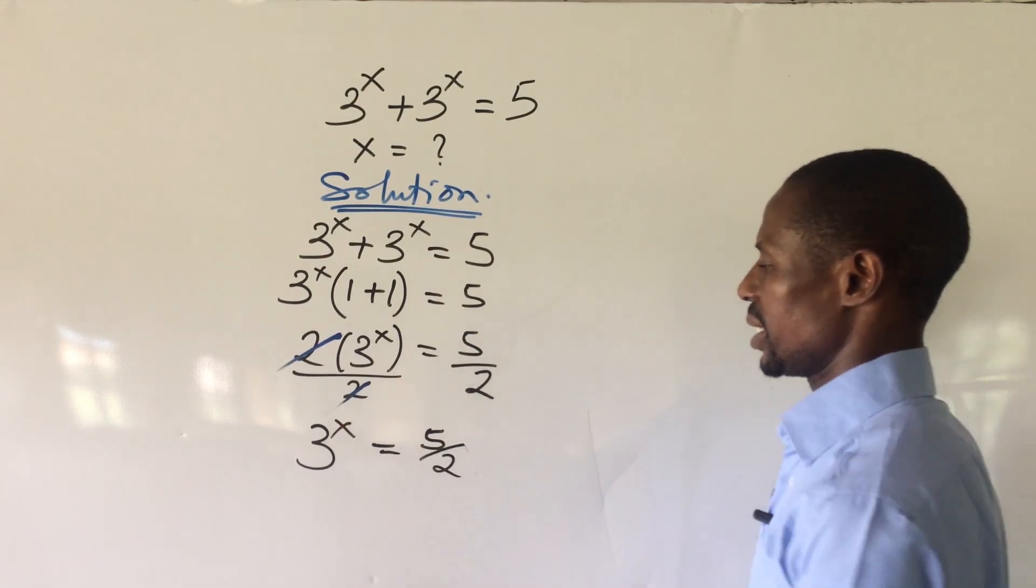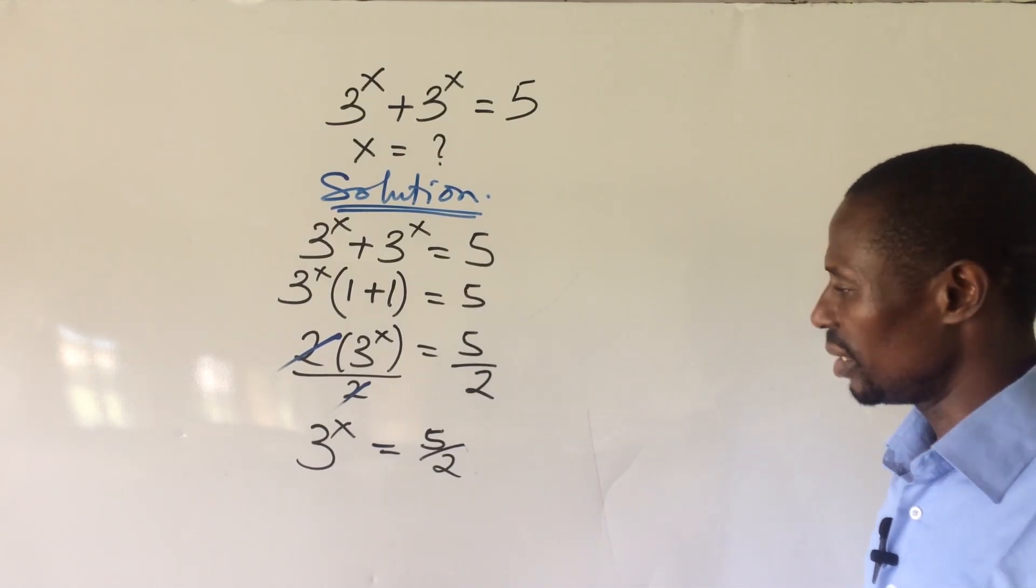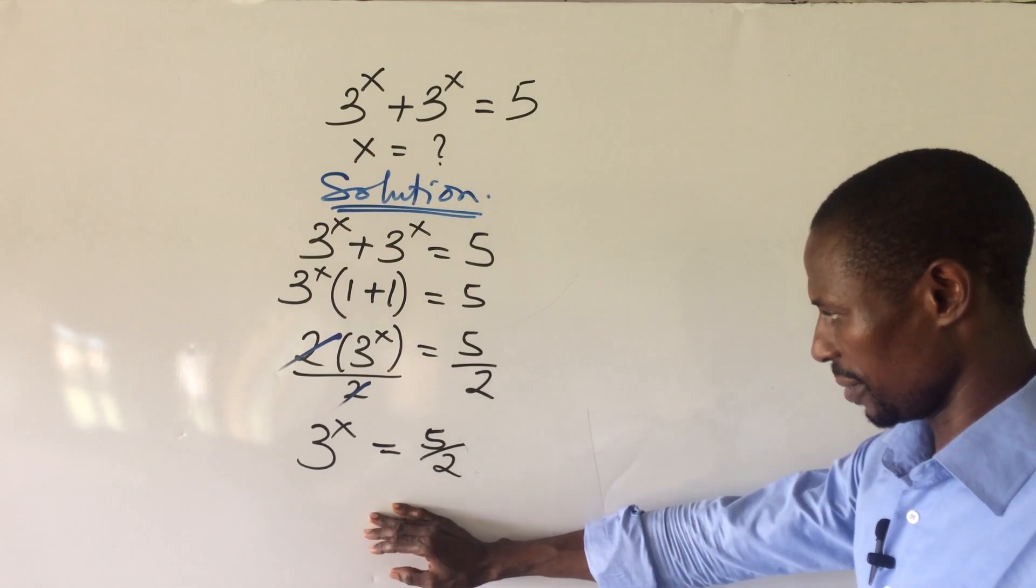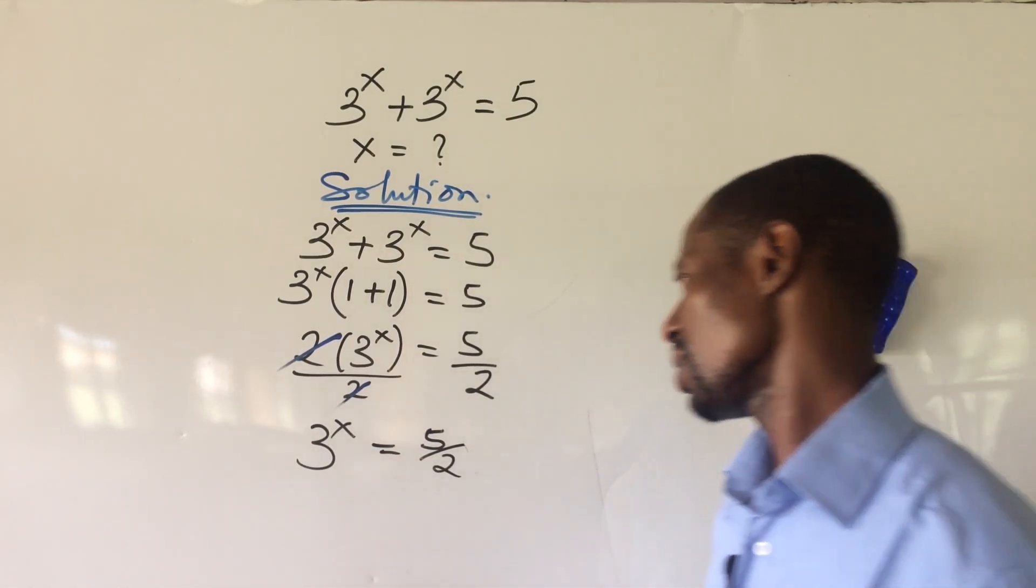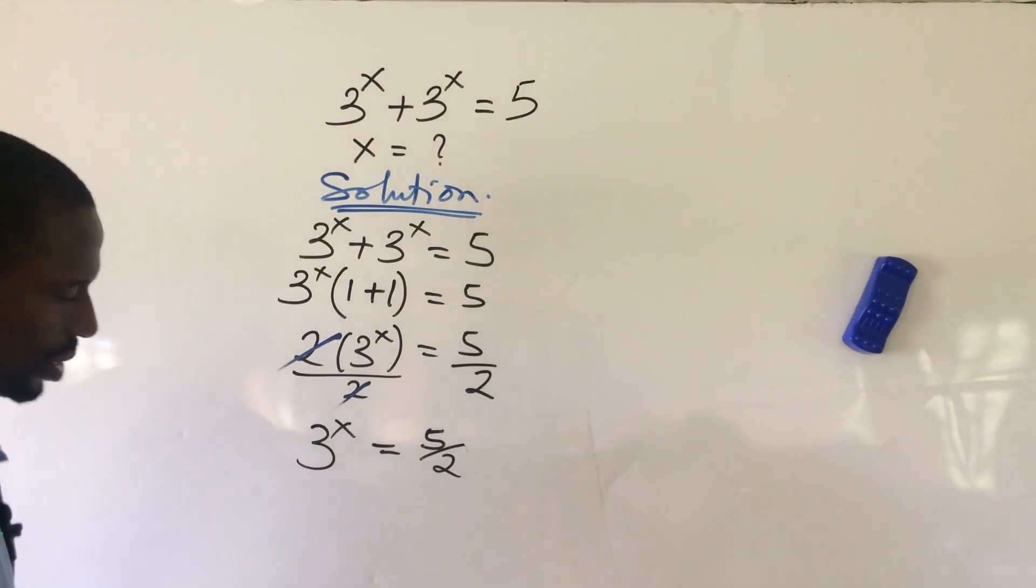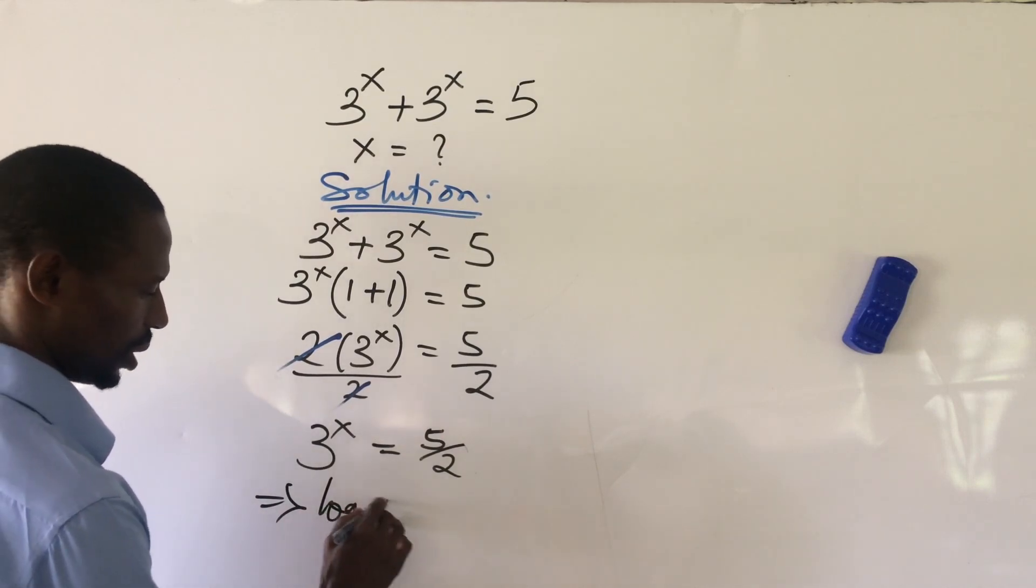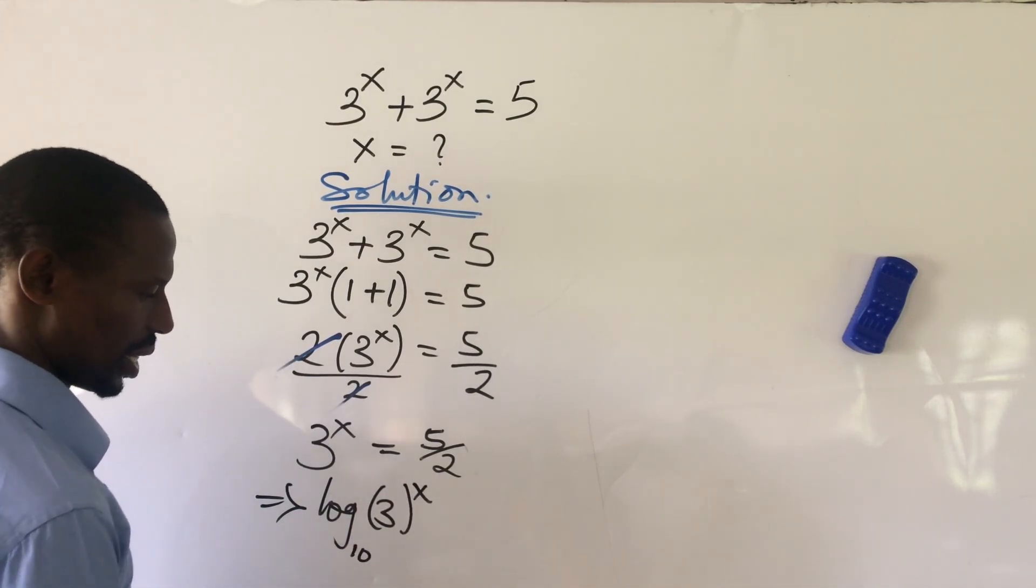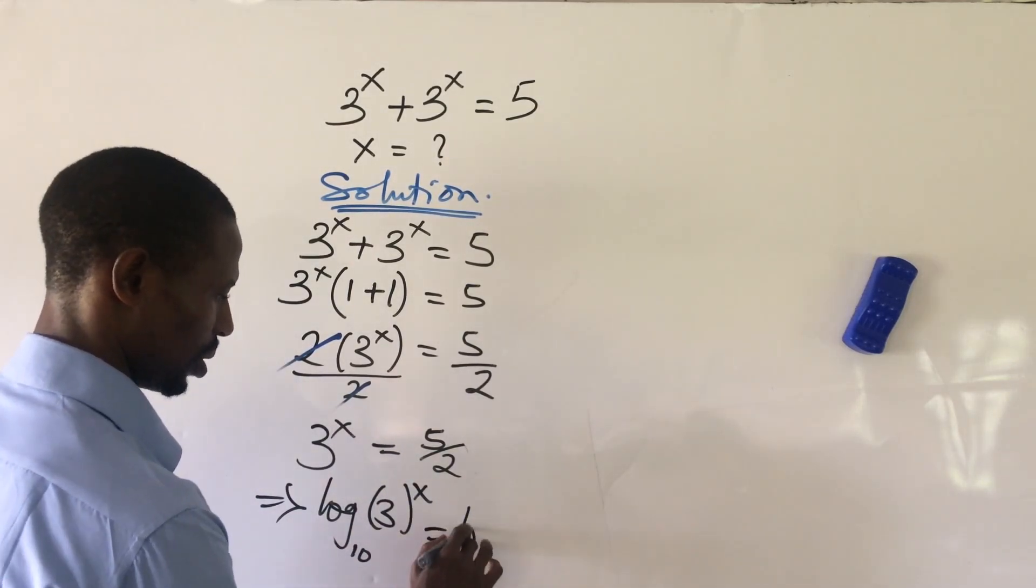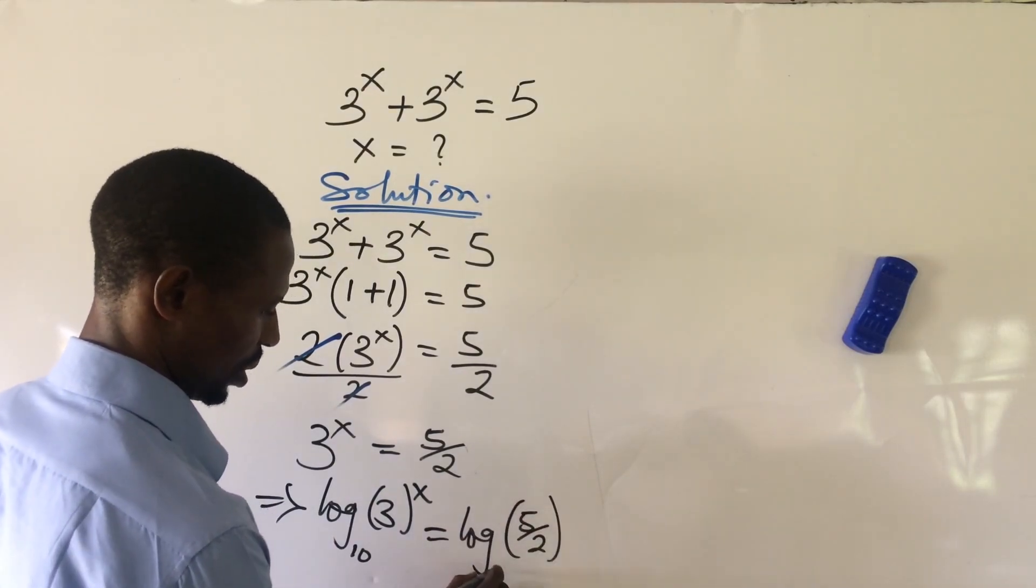For us to get our x here, we can take the ln of both sides, which is the natural log to base e of both sides. But here, let's take a log to base 10 of both sides. So if we take a log to base 10 of both sides, this now implies log 3 bracket 3 to the power of x base 10 equal to log 5 all over 2 base 10.